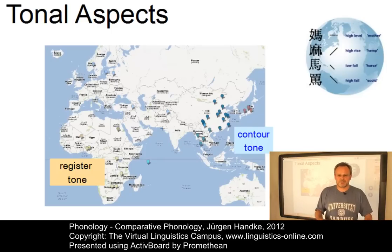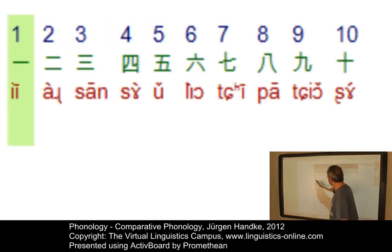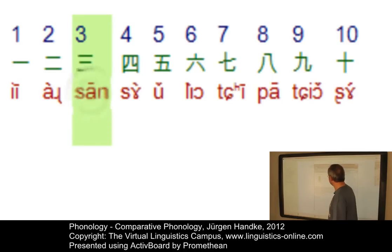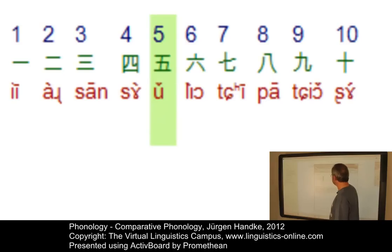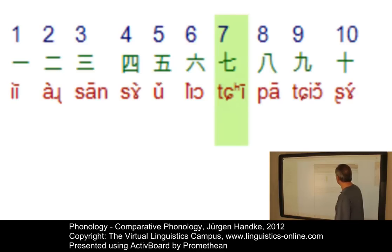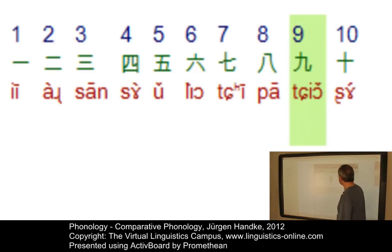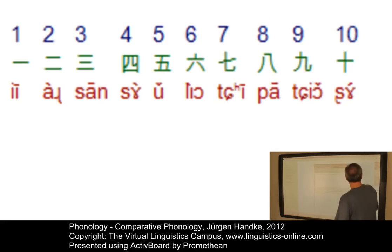Let's listen to an example. A speaker counts from 1 to 10 in Mandarin Chinese, taken from the Virtual Linguistics Campus Language Index. 一 — a level tone. 二 — a fall. 三 — a level. 四 — a fall. 五 — a fall-rise, a contour tone. 六 — a fall. 七 — a level tone. 八 — level again. 九 — a fall-rise again. 十 — a rise. So we have several contour tones and several level tones.